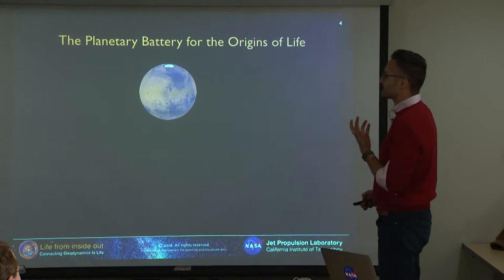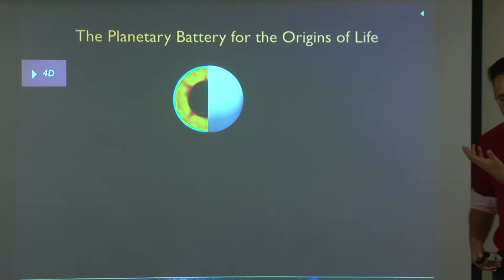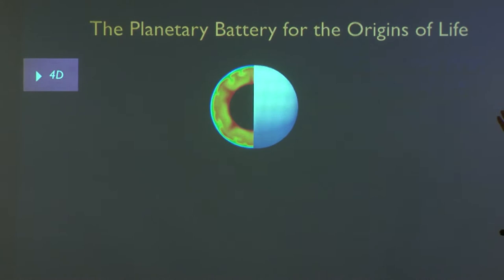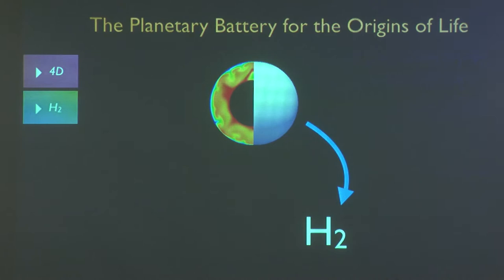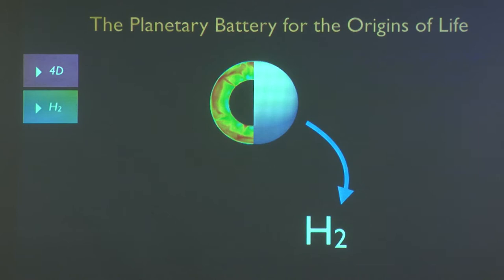Let me explain what I mean by the planetary battery for the origins of life. When we model a planet like Mars and look at how it evolves as a function of time — how heat flows, how surface recycling and outgassing happen — this allows us to understand whether a planet can generate hydrogen. We can say when the planet could do that effectively, and where exactly. We can connect the 'where' to current observations on Earth or Mars, and the 'when' using time capsules in rocks.